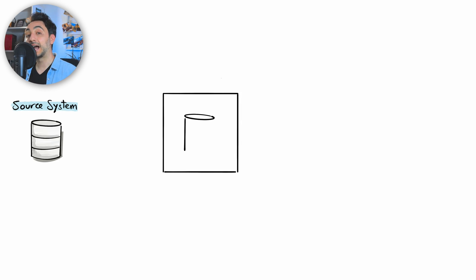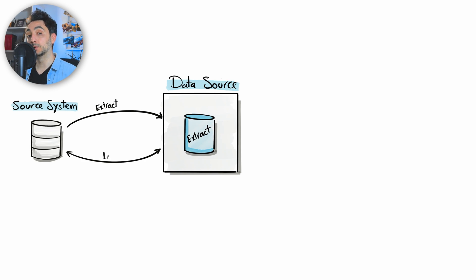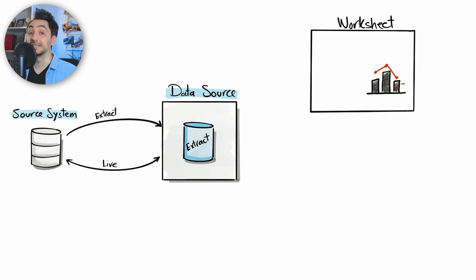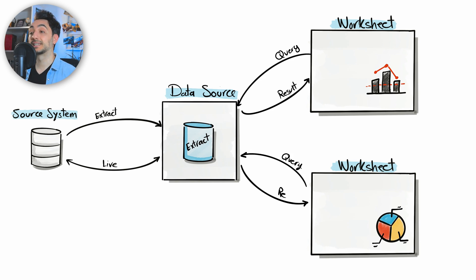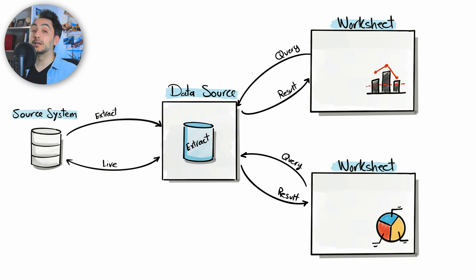To understand how the different Tableau filters work, let's have a quick recap on how Tableau processes data through different layers. First, you connect your original data to Tableau data sources — either via an extract connection, which loads a copy of the data inside Tableau, or via a live connection to get data on demand. Worksheets then send queries to the data source, which responds by sending result data back to the visualizations.